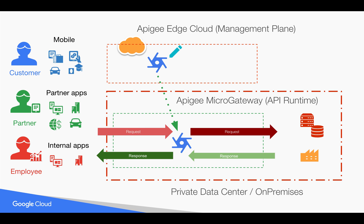The micro gateway is installed in your own private data center on-premises, closer to your backend workloads, to reduce latencies and give you full control of the runtime where request-response traffic flows. Whenever a request-response flows through the Edge Micro Gateway, metrics are pushed back to Apigee Edge cloud as API metadata, which can be used for analytics and reporting purposes.